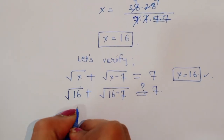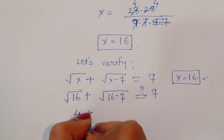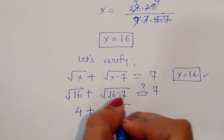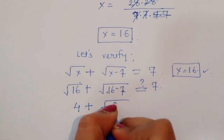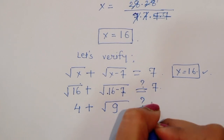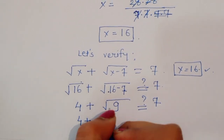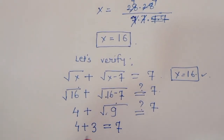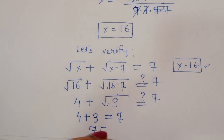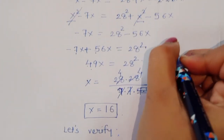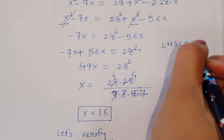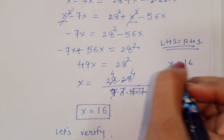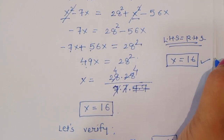Square root of 16 is 4, and 16 minus 7 is 9, so we have 4 plus square root of 9. Square root of 9 is 3, so 4 plus 3 is equal to 7. LHS is equal to RHS. So the value of x is equal to 16. This is the correct solution. Thank you.